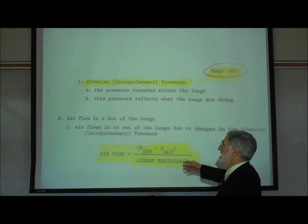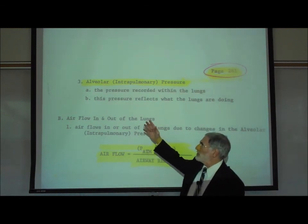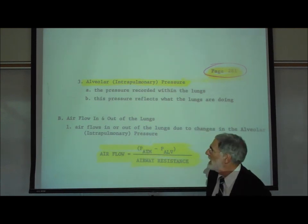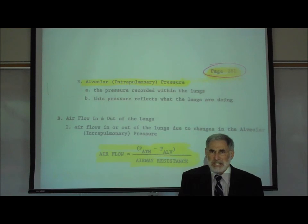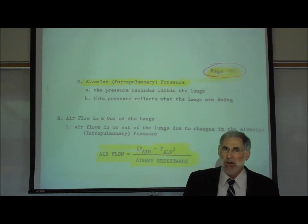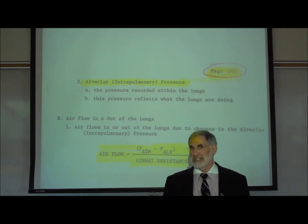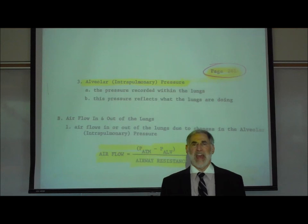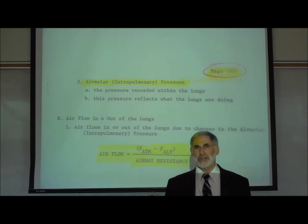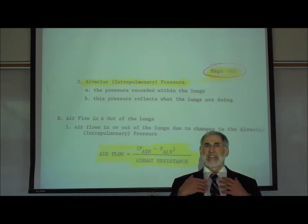The third pressure is the alveolar or intrapulmonary pressure — the pressure in the alveoli, also called the pressure within the lungs. When the chest is enlarged using your respiratory muscles, that causes a decrease in the alveolar or intrapulmonary pressure. When you relax the respiratory muscles and the chest decreases in size, that causes an increase in the alveolar or intrapulmonary pressure. We're going to be using these three pressures to describe pulmonary ventilation — the process by which air is sucked into the lungs and blown out.